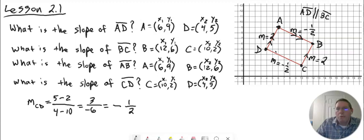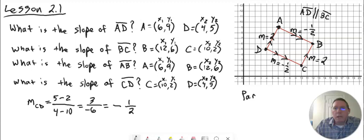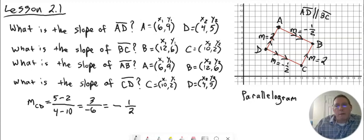We put double arrows on those two lines, meaning they are parallel. So we have opposite sides that are parallel, and then opposite sides that are parallel on the other pair. When you have a four-sided figure with all opposite sides parallel, we call that a parallelogram. This is actually a parallelogram — we'll talk about that later. For this particular lesson, all you need to do is identify the slopes of all the sides of whatever shape is given.